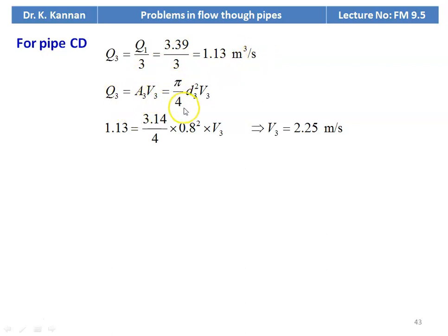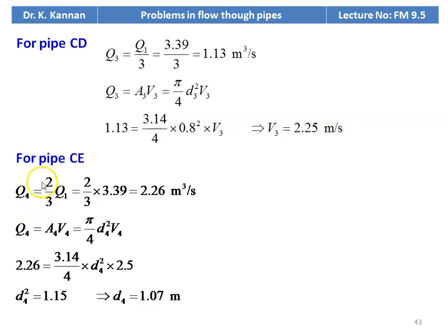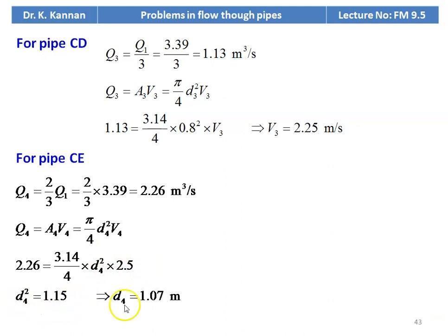Q3 equal to A3 V3, so pi by 4 D3 square into V3. Substituting: 1.13 equal to 3.14 divided by 4 into 0.8 square into V3, so V3 equal to 2.25 meters per second. For pipe CE: Q4 equal to 2 by 3 times of Q1, which is 2 by 3 into 3.39, equal to 2.26 meter cube per second. Q4 equal to A4 into V4, so pi by 4 D4 square into V4. Substituting: 2.26 equal to 3.14 divided by 4 into D4 square into 2.5, so D4 square equal to 1.15, diameter D4 equal to 1.07 meter.